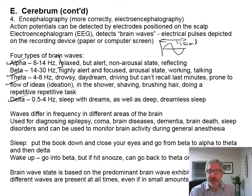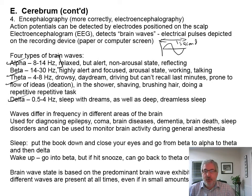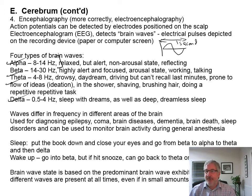And your alarm goes off, you might go into beta, but then you hit snooze and you can go right back into theta or even delta very fast. Your brainwave state is defined by the dominant brainwave that's present — all the brainwaves are present at all times, but there's one that's dominant and the rest are present in lesser amounts.